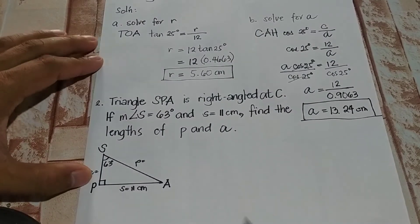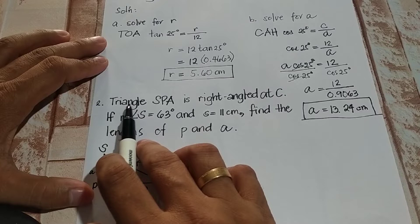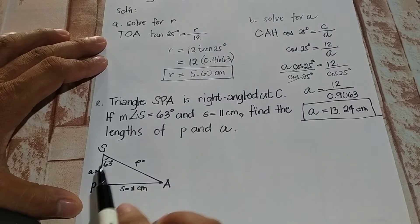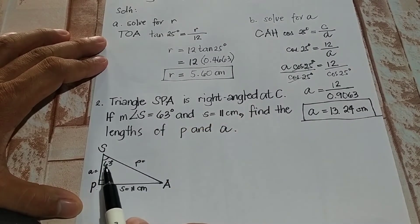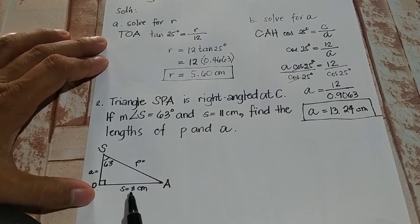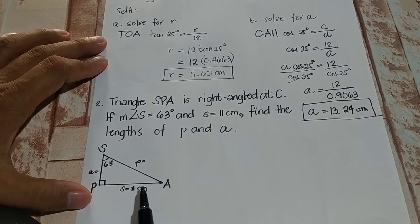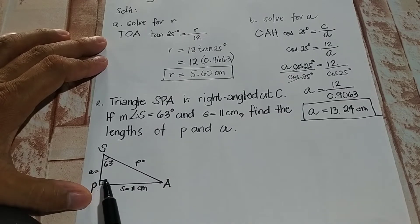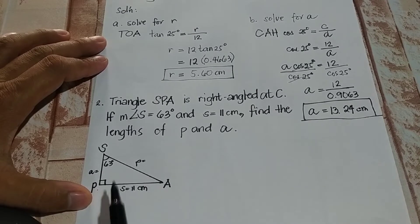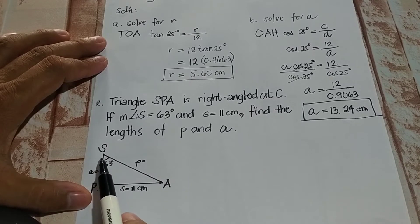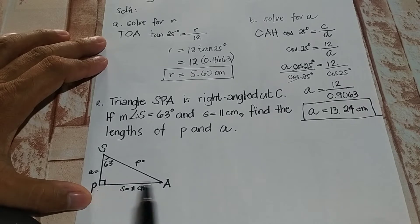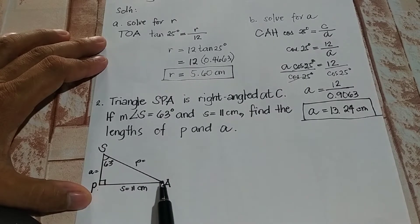Now let's move on to problem number two. Triangle SPA is right-angled at A. If the measure of angle S is 60 degrees and side S — opposite to that angle — is 11 cm, find the length of side P, which is our hypotenuse, and side A. Our given is one acute angle, 63 degrees, and one leg which is 11 cm, because side P is our hypotenuse.